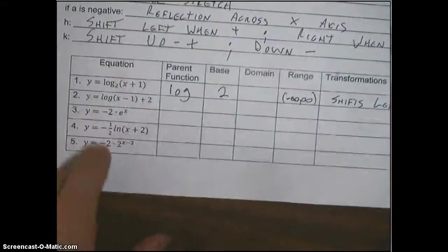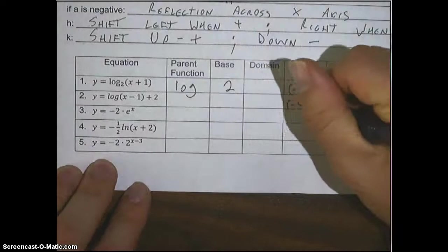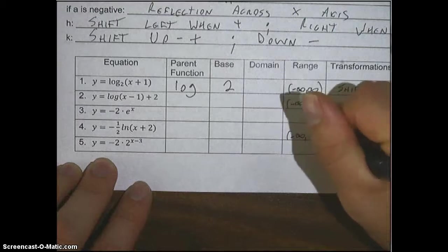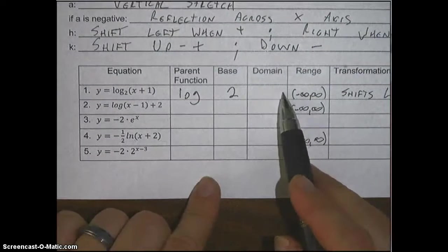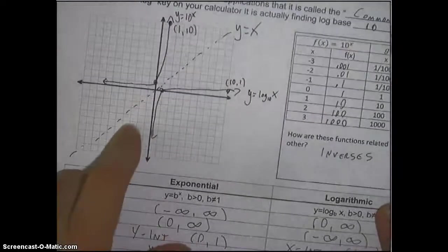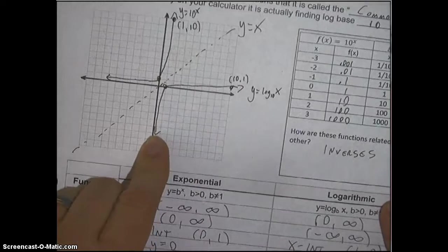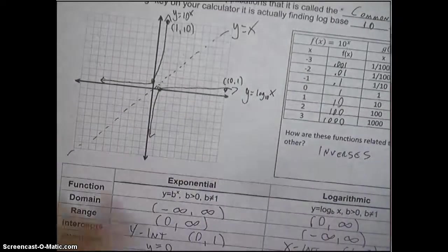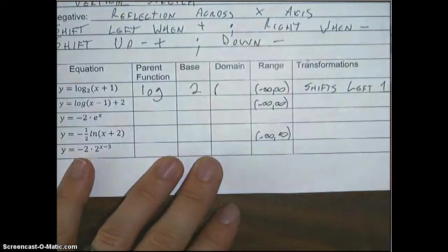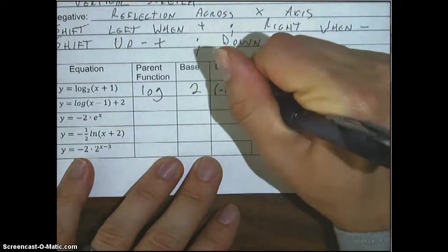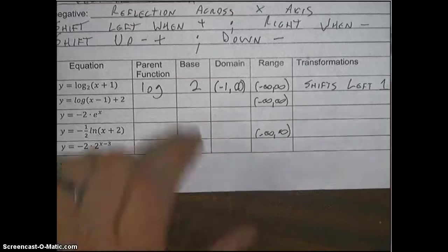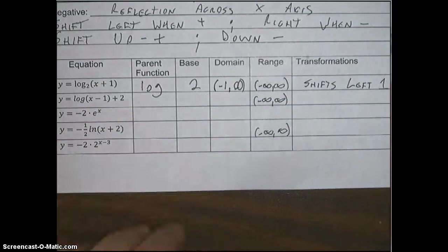So, the ranges are done. The domain is what's going to change. When you shift this thing left 1, previously, it started at 0. This function, this logarithm function, starts at 0. But if you shift it to the right 1, or left 1, or right 2, or left 2, that's going to shift the domain. So, when you shift it left 1, it's going to change the domain. Instead of starting at 0, it's going to start at negative 1. Because 0 minus 1 is negative 1. So, now the domain goes from negative 1 to infinity.